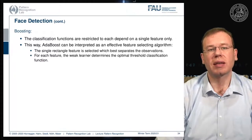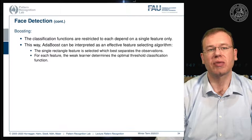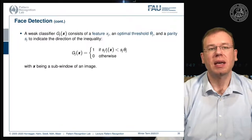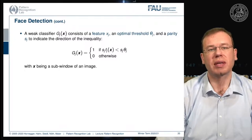The single rectangle feature which best separates the observations is selected. For each feature, the weak learner determines the optimal threshold classification function. A weak classifier consists of a feature xj, an optimal threshold fj, and a parity sj to indicate the direction of the inequality. These are very simple classifiers — essentially just evaluating a threshold and parity — where x is a sub-window of an image.